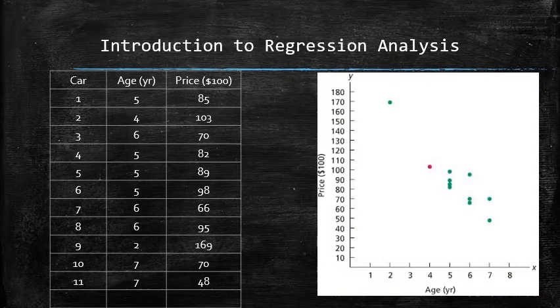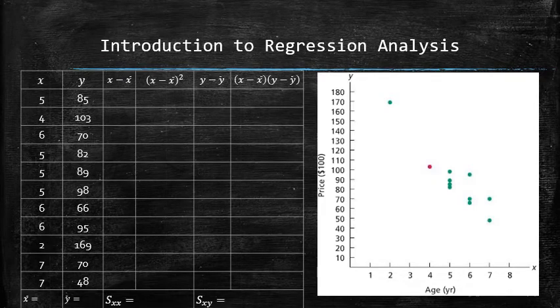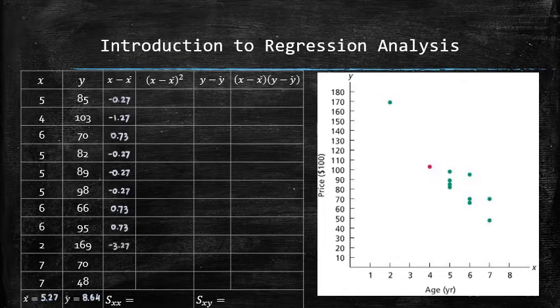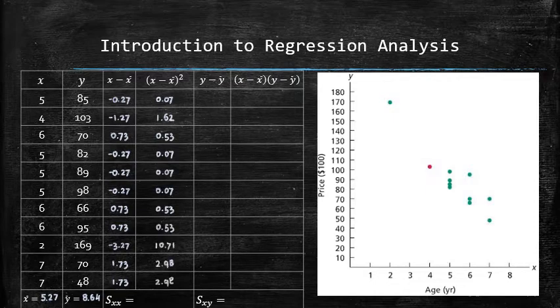Now let's use the same process to find the line of best fit for our original data set. First, we need to find the average input and output. x bar is 5.27 and y bar is 8.64. We subtract x bar from each value of x to fill out the third column and then square each entry to get the fourth column.